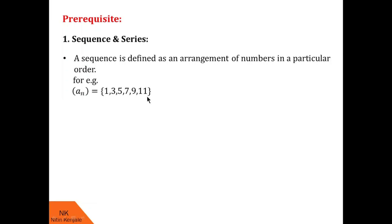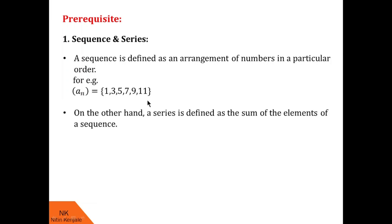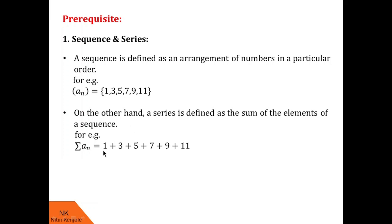Now we will talk about series. A series is defined as the sum of elements in a sequence. So in this case, series a_n is given by 1 + 3 + 5 + 7 + 9 + 11. On similar lines, you can have an infinite series which consists of the sum of infinite numbers in a sequence.